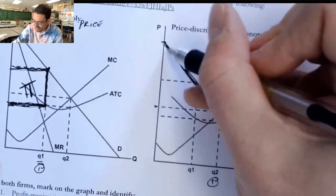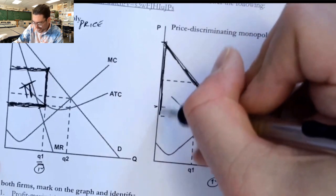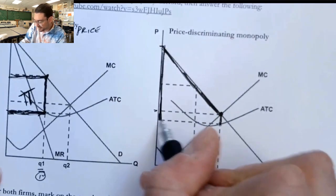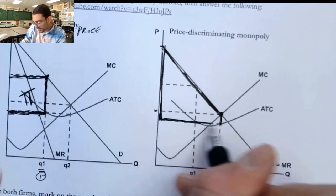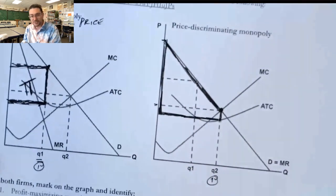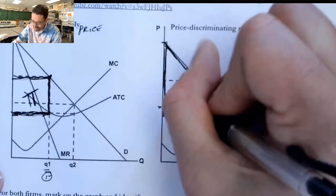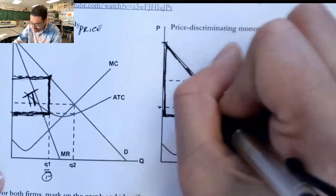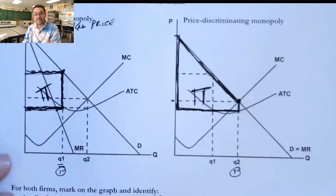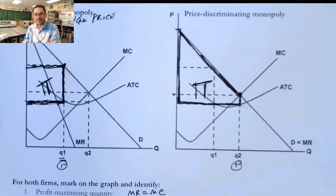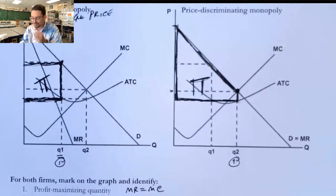It's going to come down and actually bottom out at the very bottom right here where that ATC line is. So it's a trapezoid actually. It's way bigger amount of profit. So you can see why a price discriminator would really be happy about the ability to do it. It captures so much extra profit.